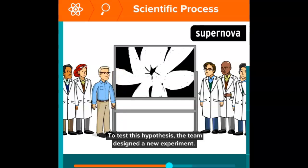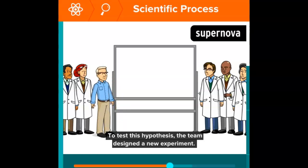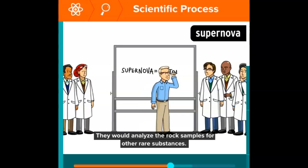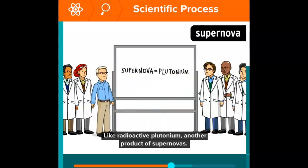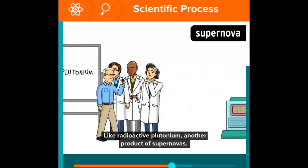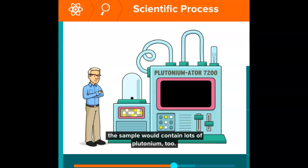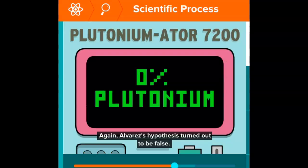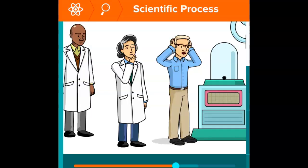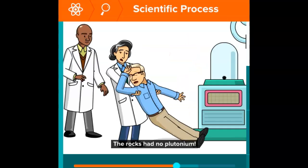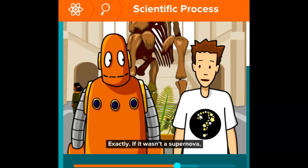To test this hypothesis, the team designed a new experiment. They would analyze the rock samples for other rare substances like radioactive plutonium, another product of supernovas. If an exploding star caused the spike in iridium, the sample would contain lots of plutonium too. Again, Alvarez's hypothesis turned out to be false. The rocks had no plutonium.